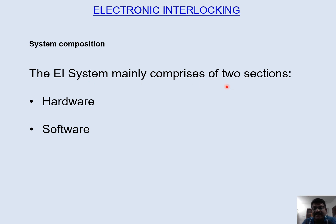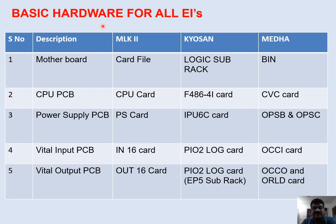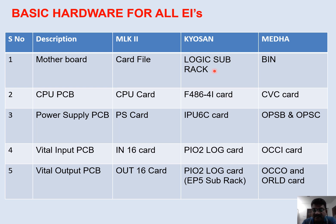The EI system mainly consists of two sections: hardware and software. The motherboard is the basic requirement for all EIs, just like a computer requires a motherboard. In Microlog 2 it is called a card file, while in Kyosun it is called a logic subrack — either E5 or E6 — and in MEDA it is called a BIN.